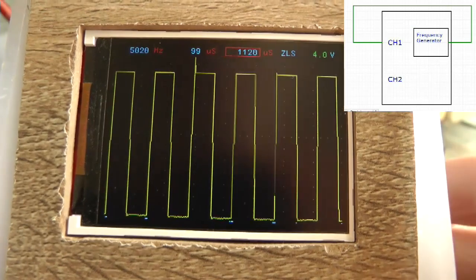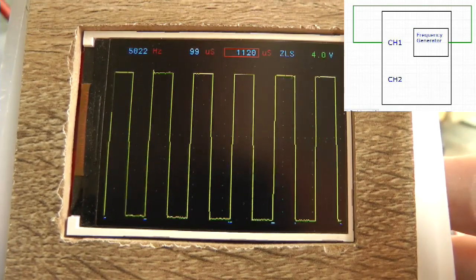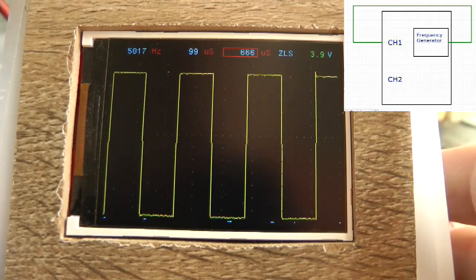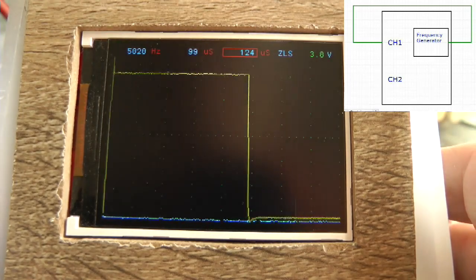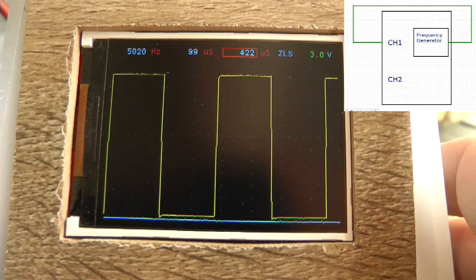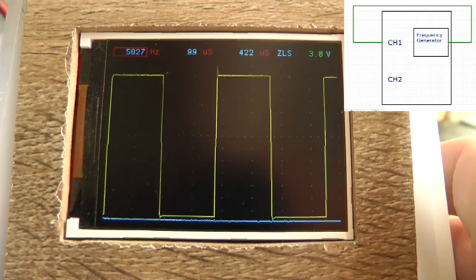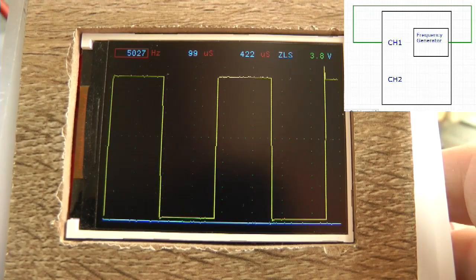As seen by the picture at the top right position, we are testing the internal frequency generator. Output of the generator is connected to the input of channel 1. We are working in unipolar mode.